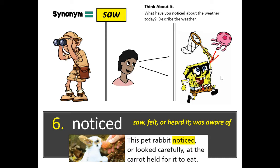Think about it: what have you noticed about the weather — or what have you seen or saw about the weather? Describe the weather. Write 'noticed,' and a synonym is 'saw' — past tense for 'see.'